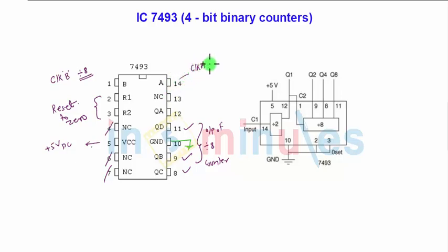Pin number 5 and 10 are required to activate the IC. Pin number 14 is clock A, which is given internally to divide by 2 counter. You can use IC 7493 as divide by 8 counter or divide by 2 counter, as well as mod 16 counter or a straight 4-bit binary counter. Pin number 13 is also not connected, and for divide by 2 counter there will be only one output, QA, which is available at pin number 12.